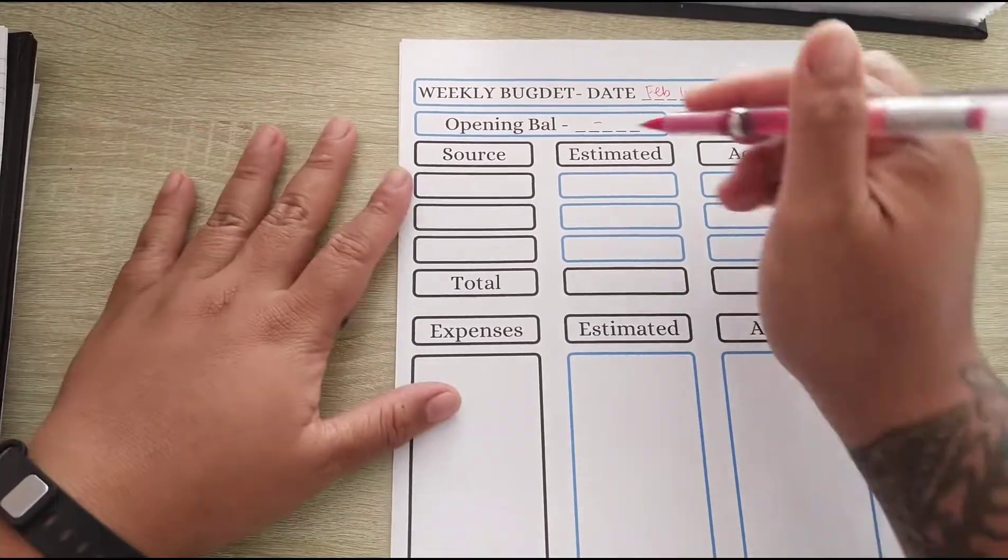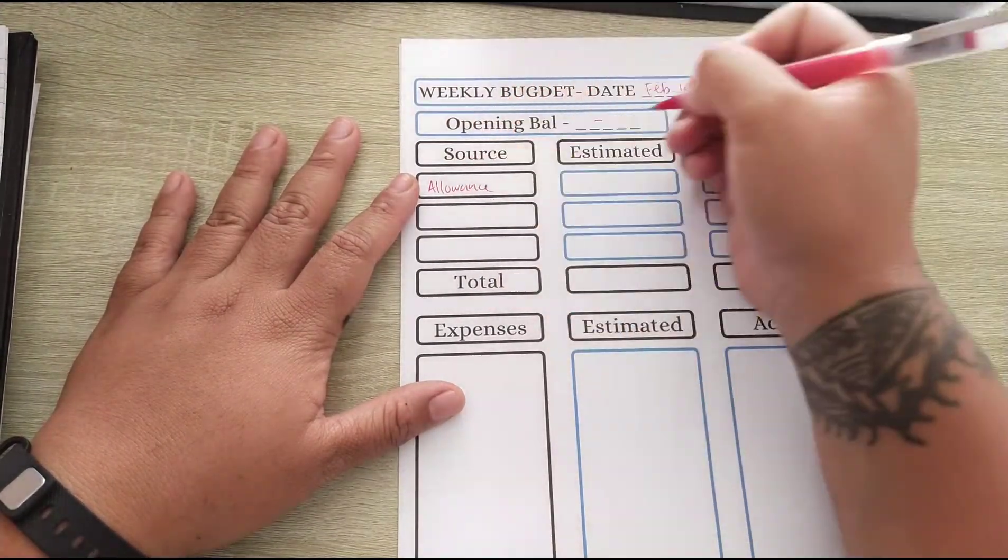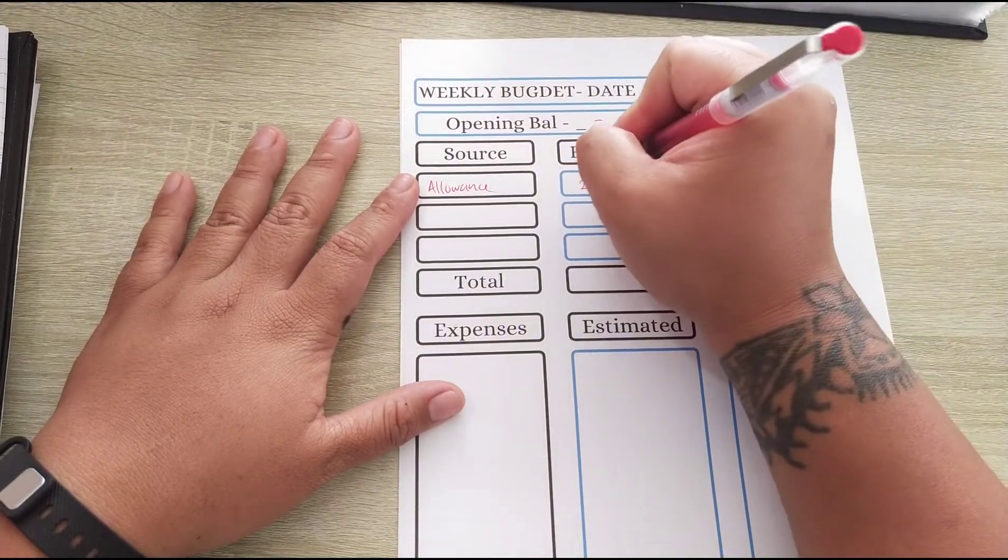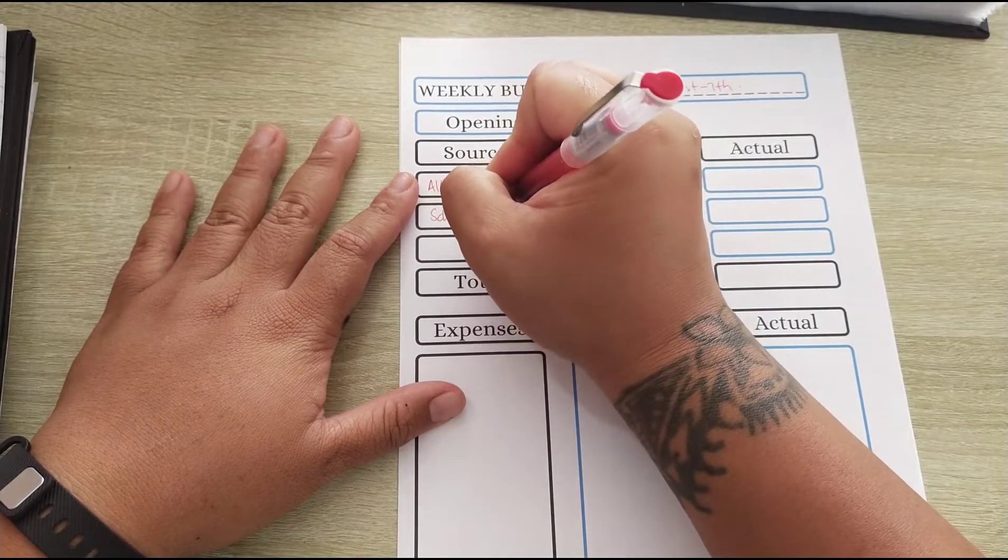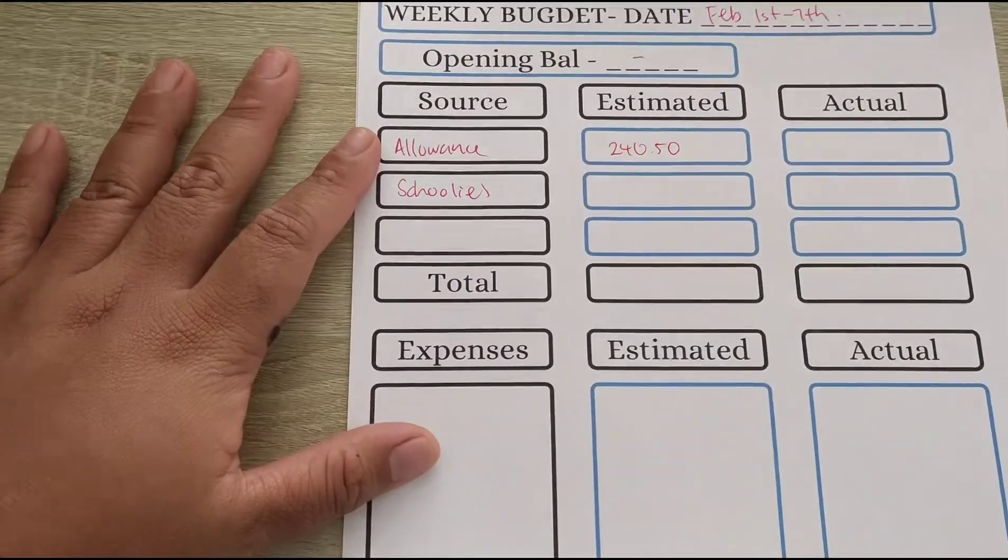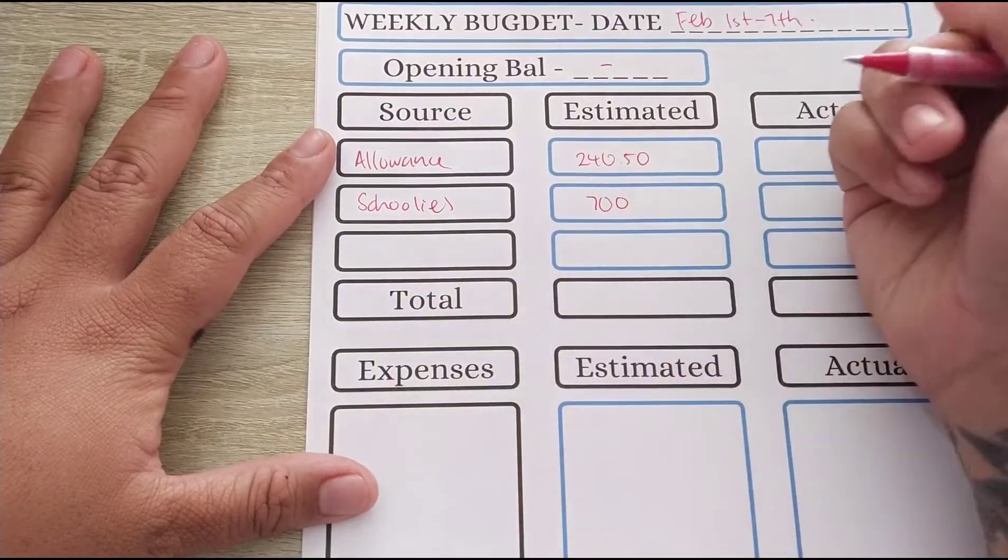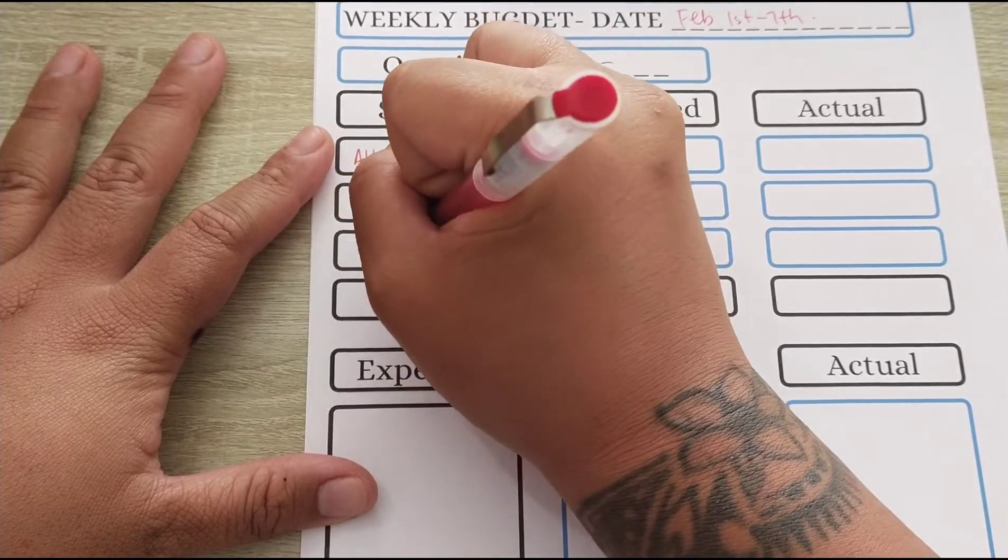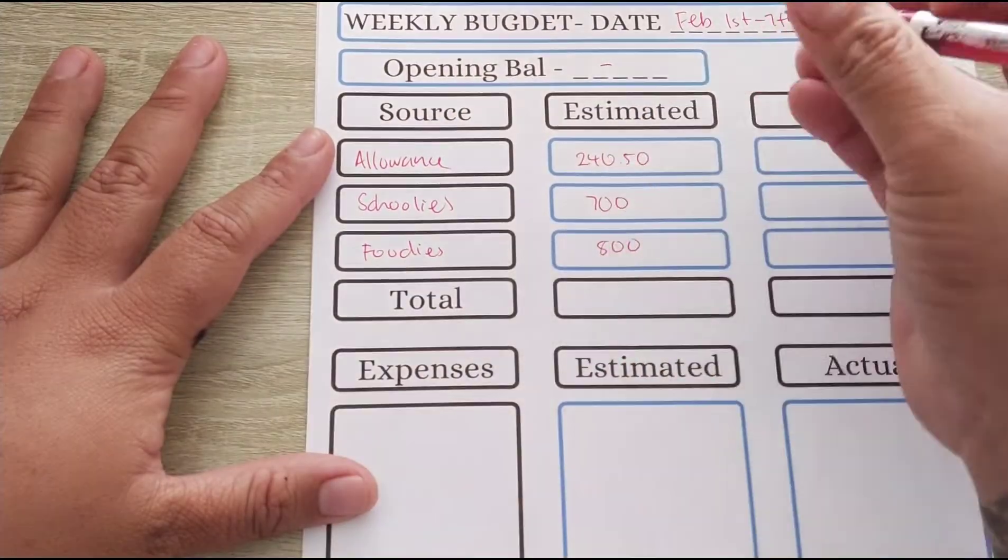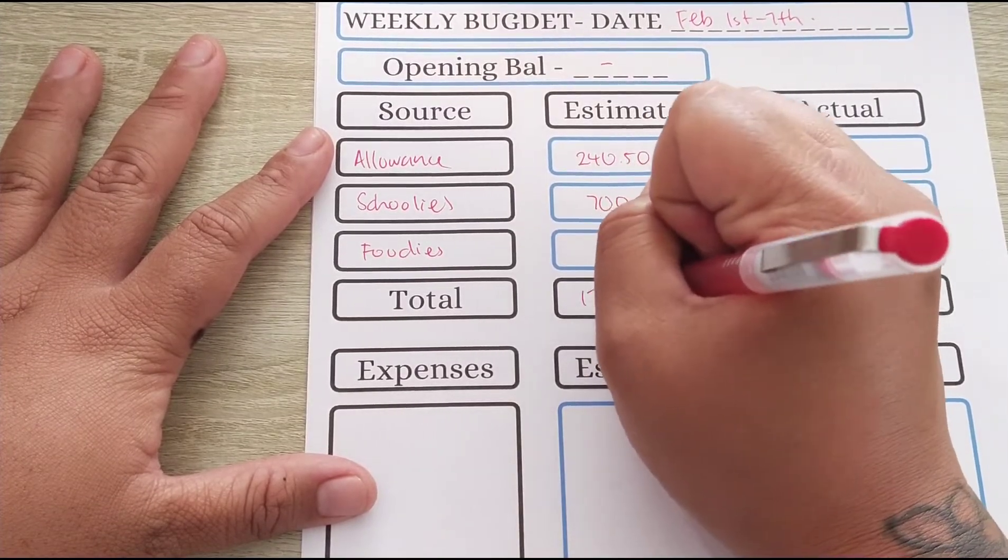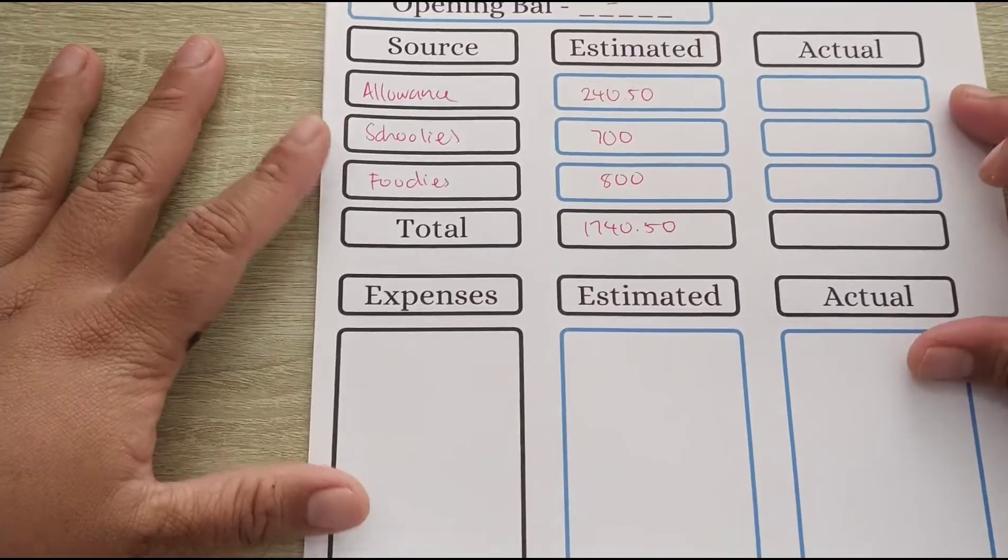We are working with quite a lot of money this week. We've got my allowance that I will get paid tomorrow, I have my work, let me just zoom in. I've got my work and I am going to estimate that at $700, and then my partner's I'm estimating that at $800. All together that is $1,740.50 that we will be working with this week.